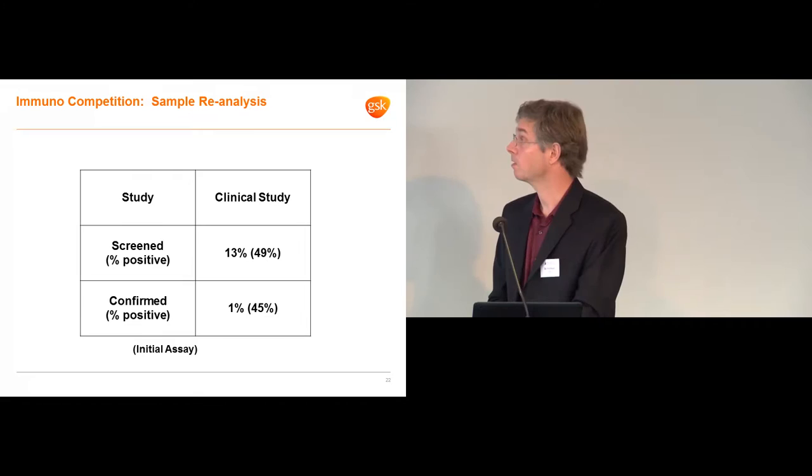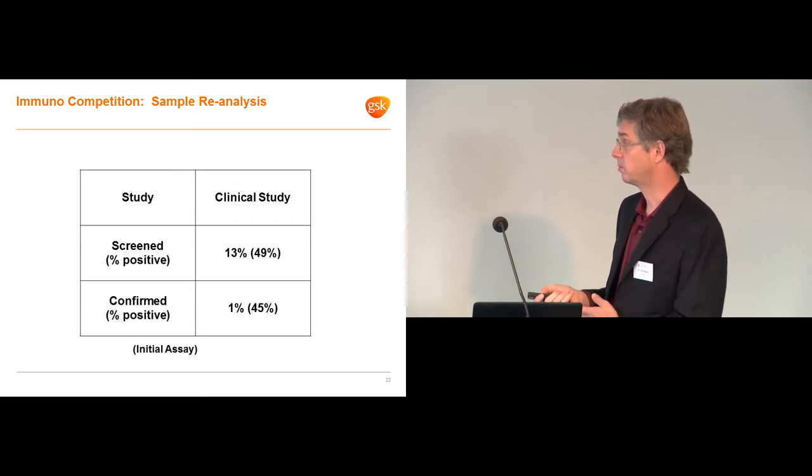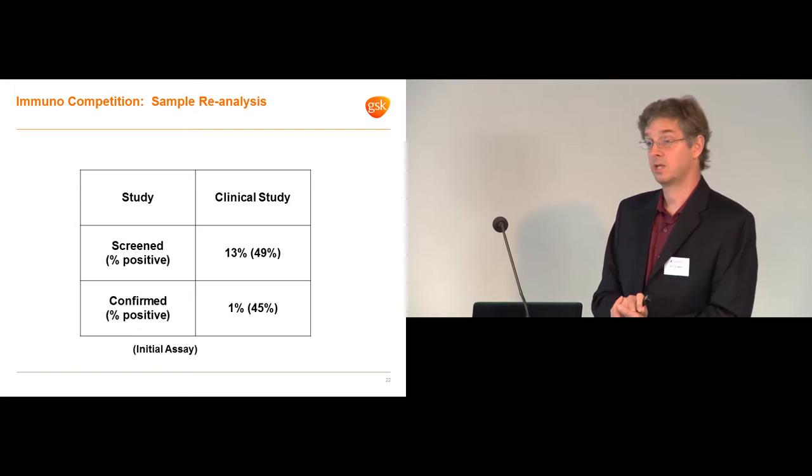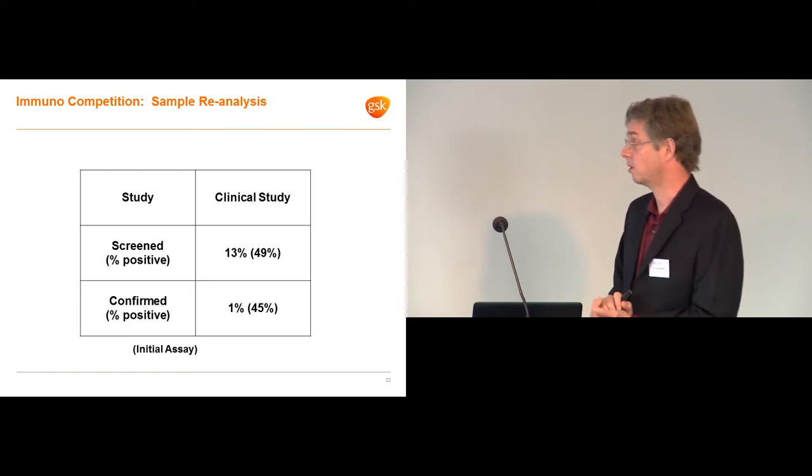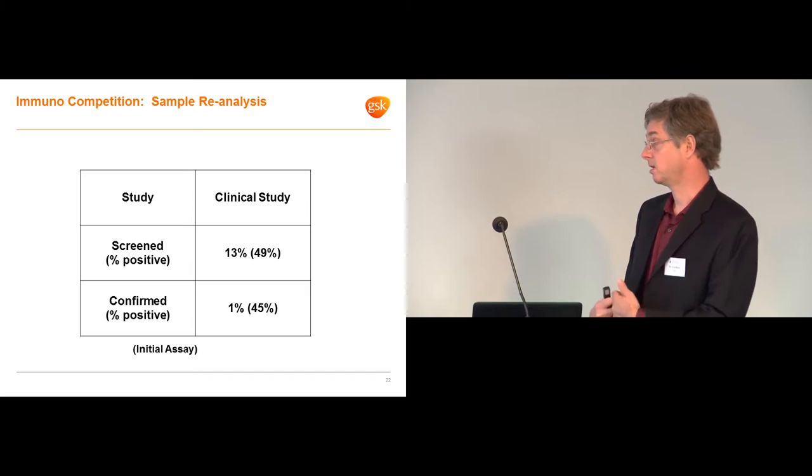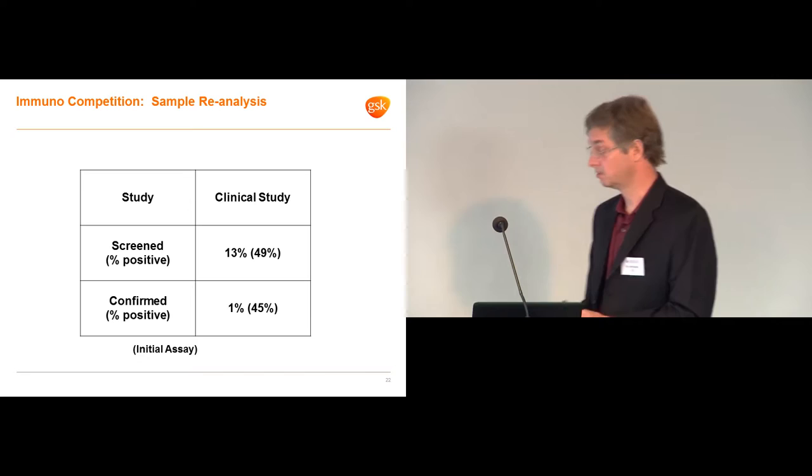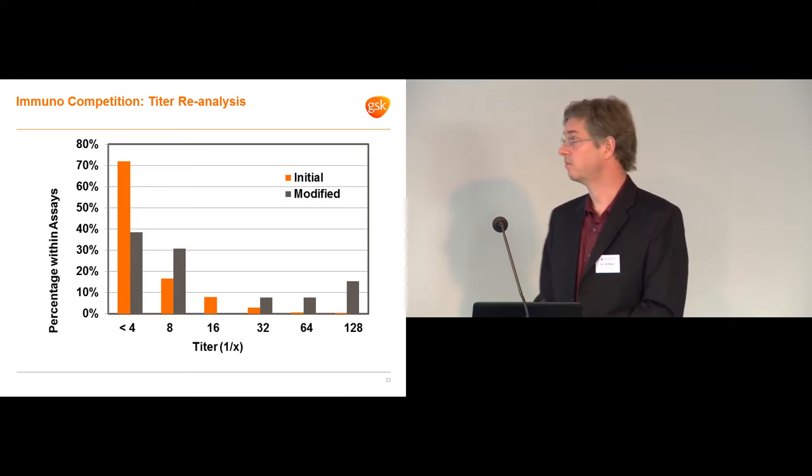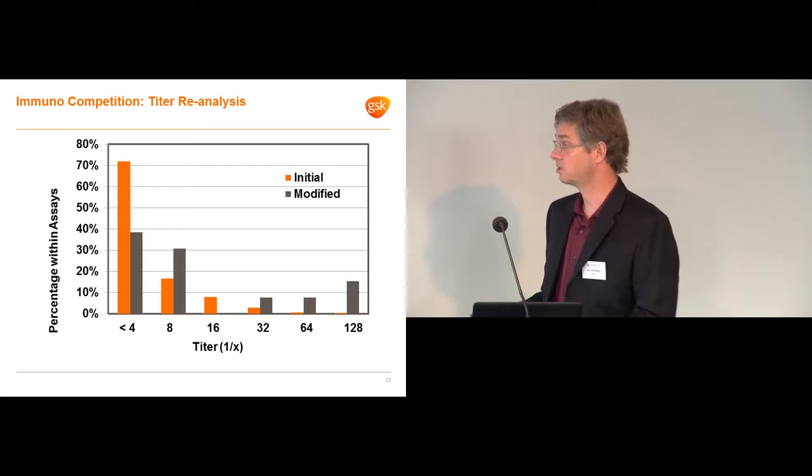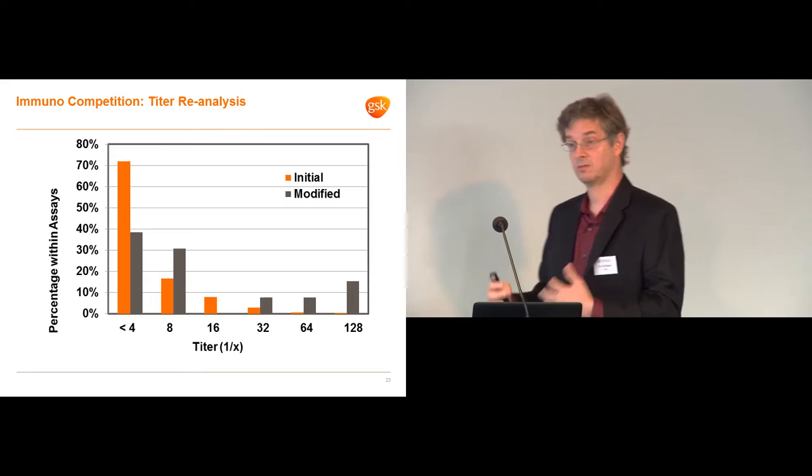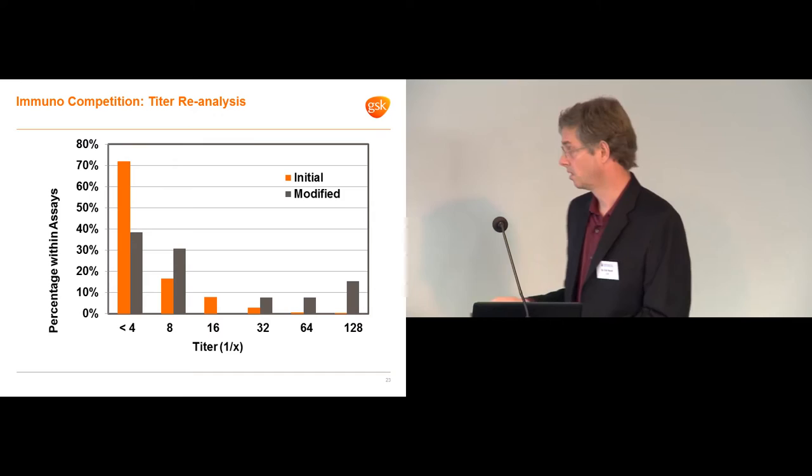When the samples were reanalyzed from the second study, in parentheses, you have the original. And then afterwards, the number of positive samples went down quite a bit. And the biggest impact had to do with the confirmatory assay where we went from 45% to 1%. And so by adding the blocking antibody had a big impact in our assay and also got rid of the false positive rate. And then when we looked at the titers of the positive samples, the overall number went from 45% to 1%. So the total number has decreased. We still had a number of individuals that were four below sort of relatively low titers, but the high ones still remained.